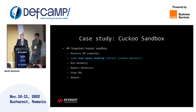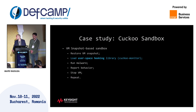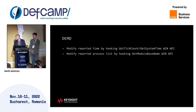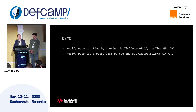As mitigation for anti-sandboxing techniques, we can add behavior-changing hooks and identify many abused APIs and hook them. In our case study and research, we use Cuckoo Sandbox and Cuckoo Monitor. Cuckoo Sandbox uses VM snapshots — it initiates snapshot loading, hooks custom libraries in user space, runs the malware, reports behavior, stops the VM, and repeats. For our demo, we will present two of our hooks: one for GetTickCount and GetSystemTime, which report the machine's time, and one for process listing with GetModuleBaseName.